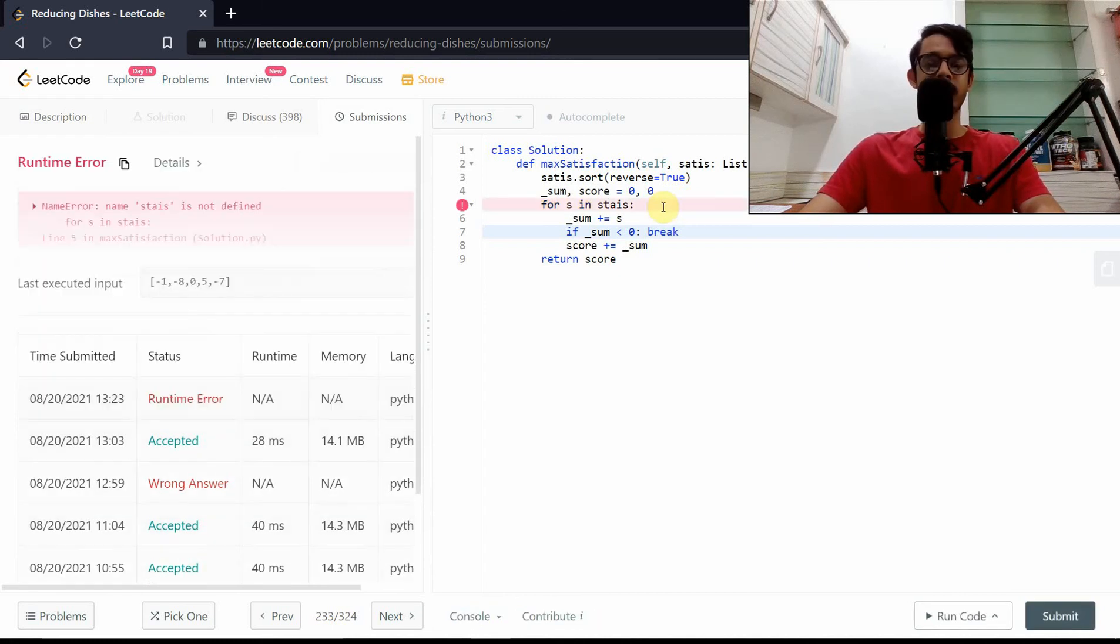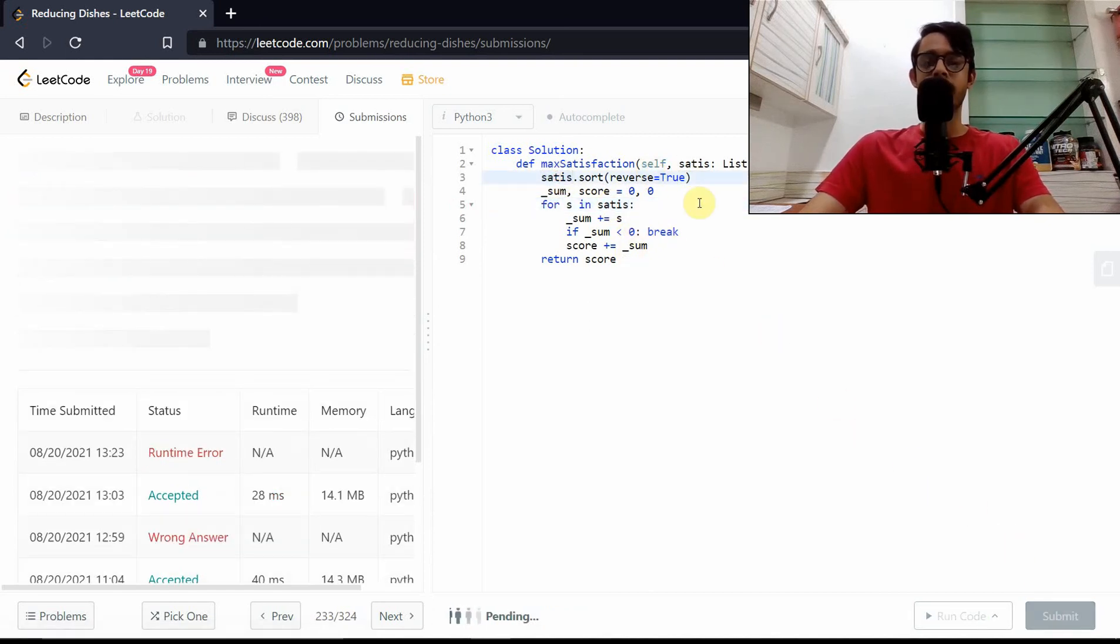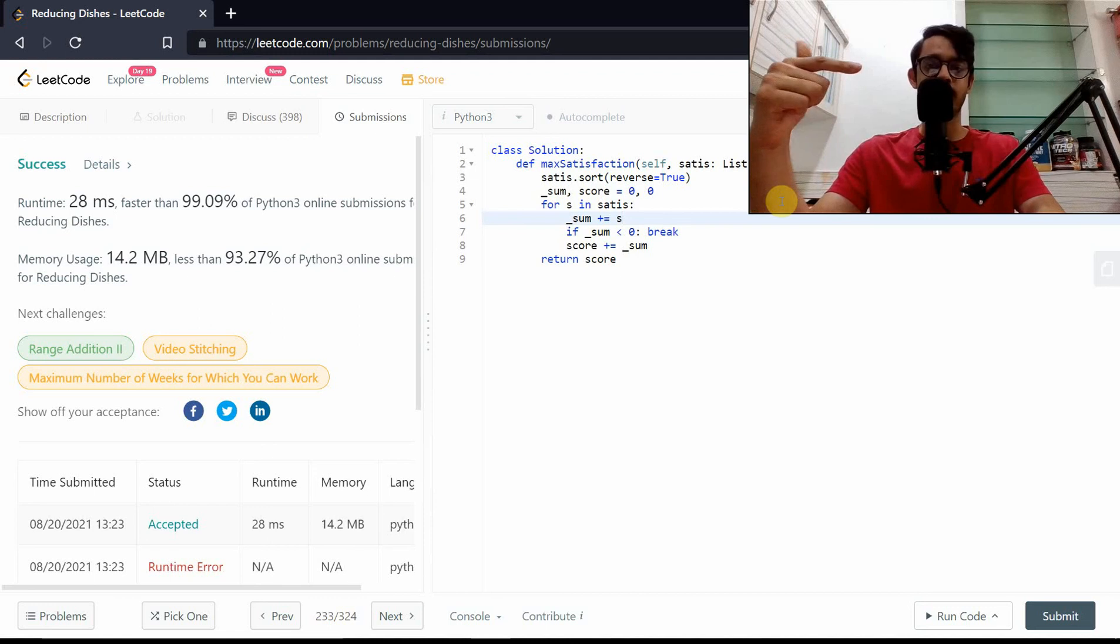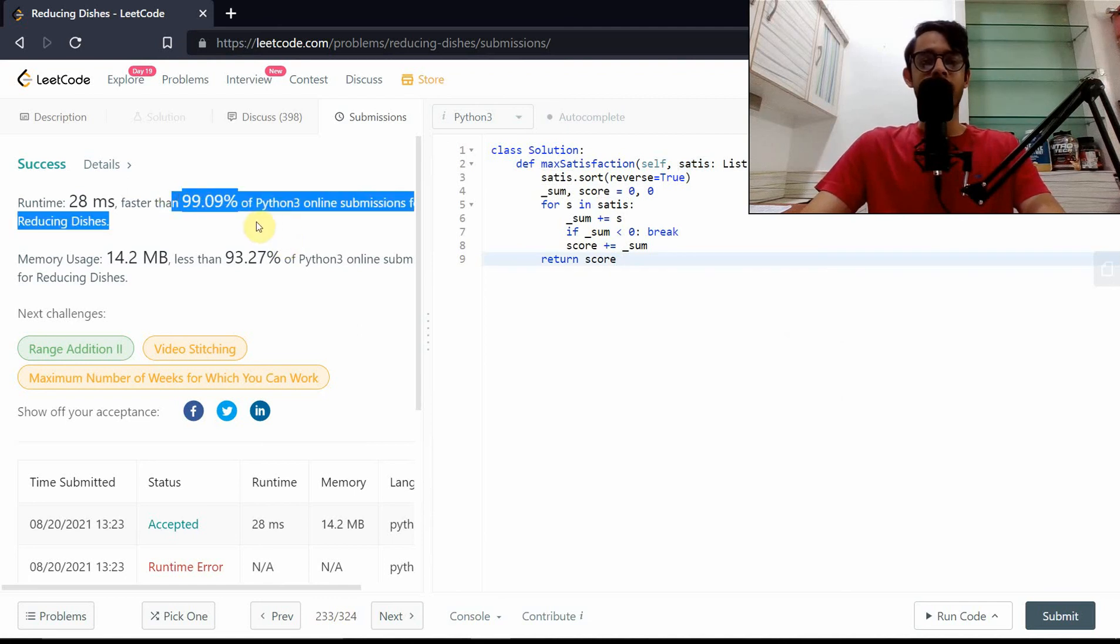Let's look at the space time complexity. This is going to be the heaviest operation taking time of order of n log n and the space of order of n. This is merge sort. These both are single variables taking space of one and this is order of n loop. The heaviest operation is this merge sort operation which takes order of n log n time and n space, where n is the length of the satisfaction array.